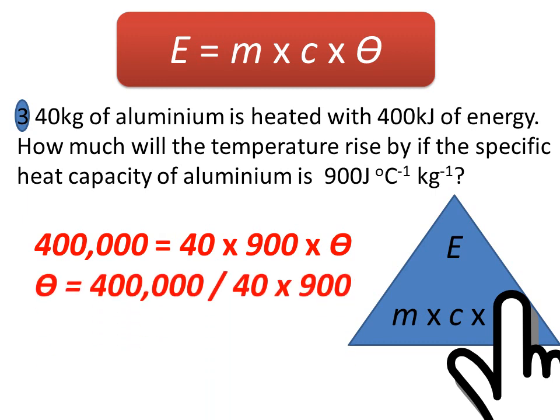So this is exactly what I've written out here. I've got 400,000 joules - 400 kilojoules - divided by the mass of 40 times specific heat capacity of 900.